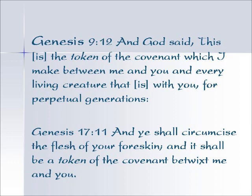Genesis 17:11 — And you shall circumcise the flesh of your foreskin and it shall be a token, a sign, of the covenant betwixt me and you. This was a covenant that had previously been made between Abraham and God, as Abraham slept through the covenant. He carried a physical external mark, and we see that Jewish people today continue to circumcise their children as a mark, as a sign of being in the bloodline of that covenant that was made.